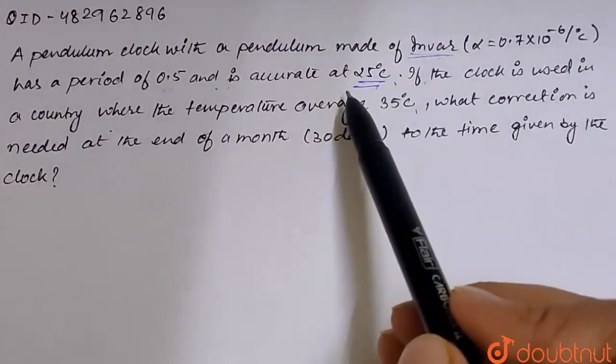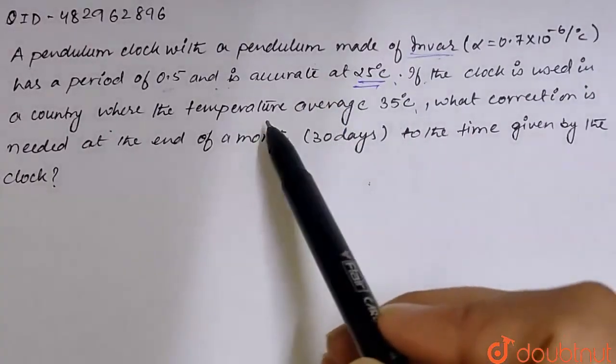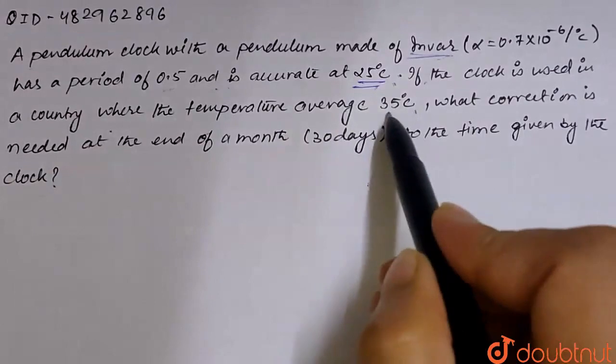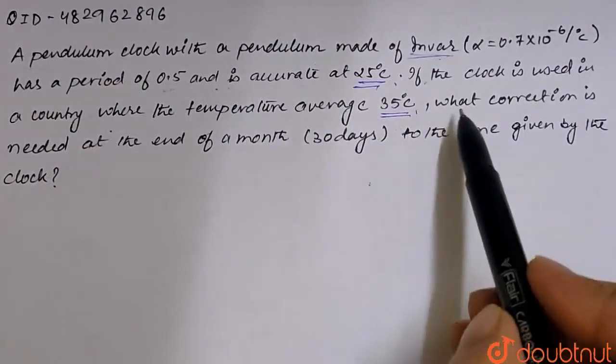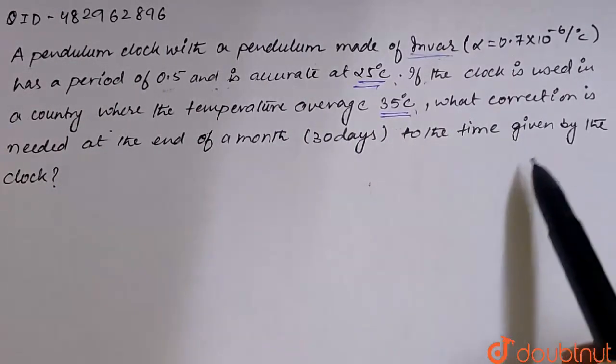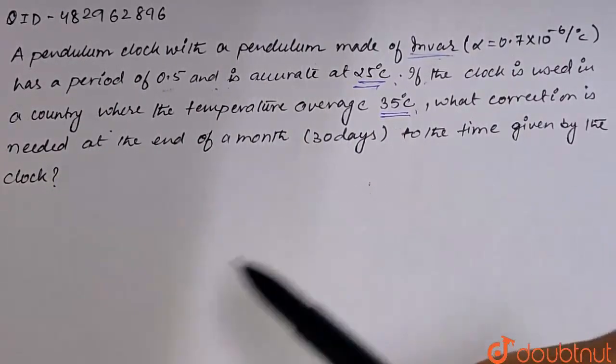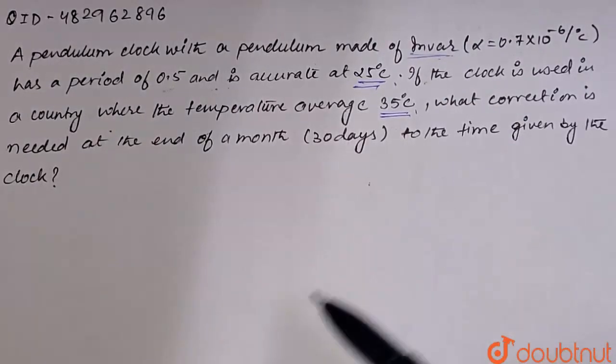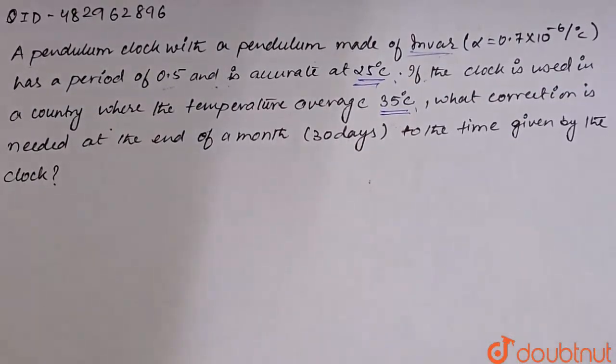If the clock is used in a country where the temperature average is 35 degrees celsius, what correction is needed at the end of a month to the time given by the clock? So what correction should we do in a month to the clock?